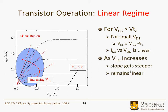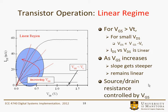As VGS increases, the slope gets steeper, but it remains linear. So this is our increasing VGS from before at a constant VDS on the previous slide. Here we're parametrizing the IDS versus VDS curve by VGS. Basically as VGS increases, the resistance goes way down. We can think of this as the source-to-drain resistance being controlled by VGS.